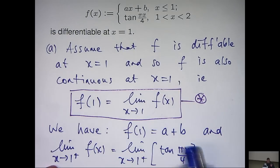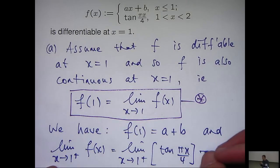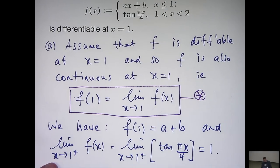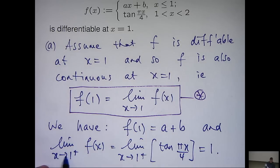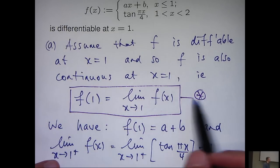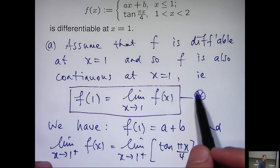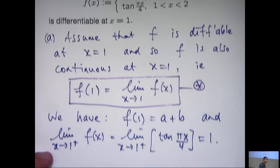Now, if I just take the limit in here I'll get tan π on 4 which is just 1. If I took the limit as x approaches 1 from the left I would actually get a plus b so I'm not going to do that again. But what we can do is involve star and make these two things equal.